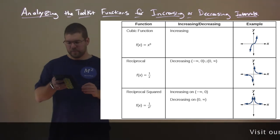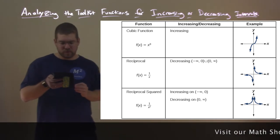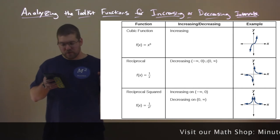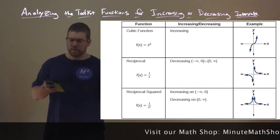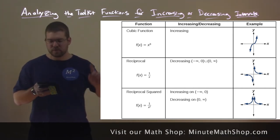The reciprocal squared is a little different. We have f(x) = 1/x squared, and that function is increasing from negative infinity to zero, and decreasing from zero to positive infinity.